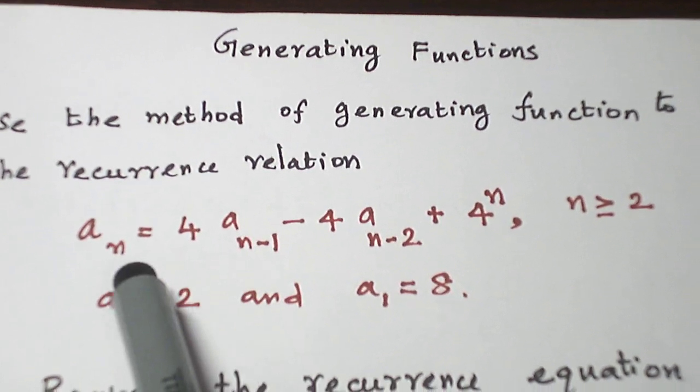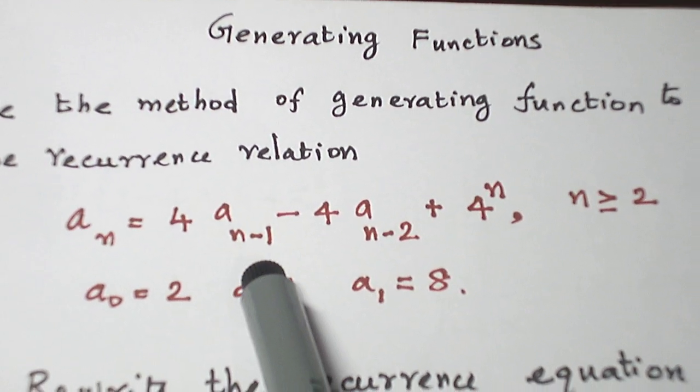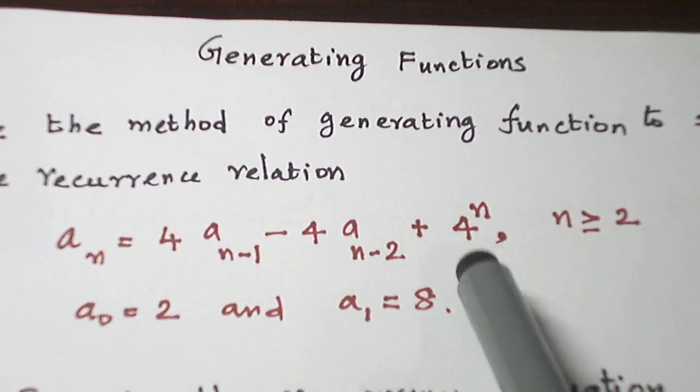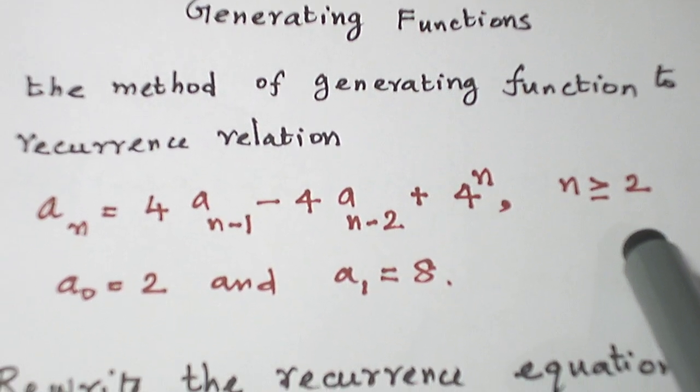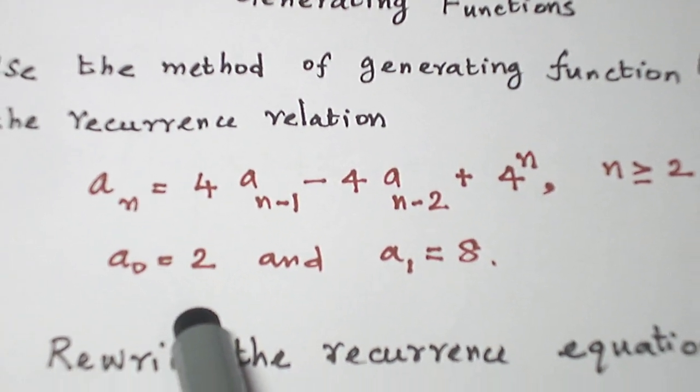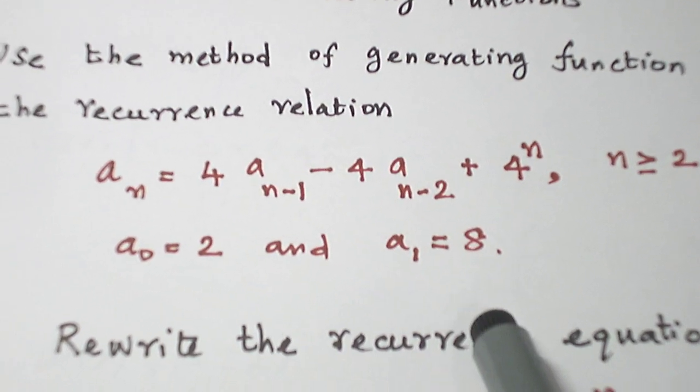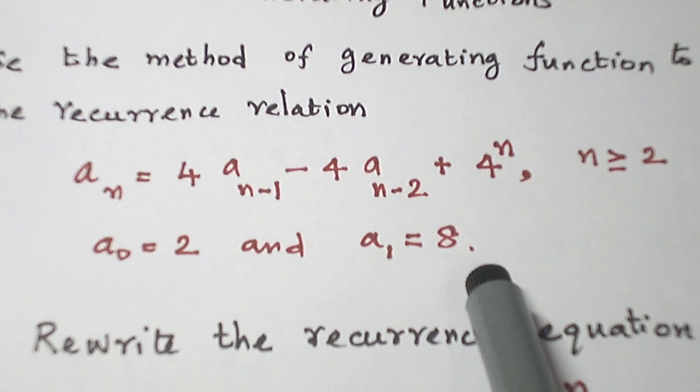Let me read the question. a_n = 4a_{n-1} - 4a_{n-2} + 4^n for n greater than or equal to 2. With the given initial values, a_0 = 2 and a_1 = 8.